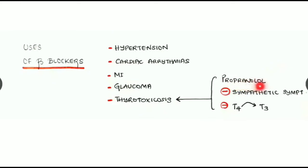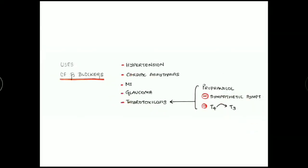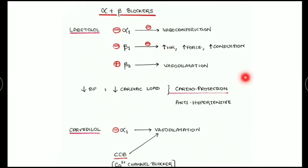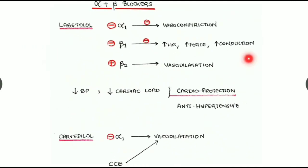Propranolol is the drug of choice for thyrotoxicosis. It inhibits the sympathetic symptoms in the patient and also inhibits the peripheral conversion of T4 to T3.